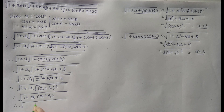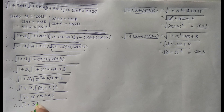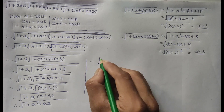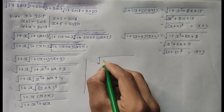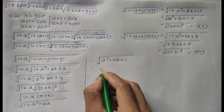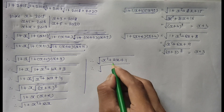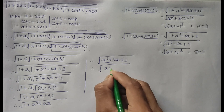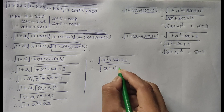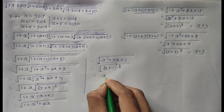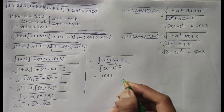Inside square root of 1 plus (x+2), inside square root of 1 plus x squared plus 2x. Therefore, inside square root of x squared plus 2x plus 1. This is a perfect square polynomial: (x+1) squared. Square and square root cancel. Finally, x plus 1 is the answer.